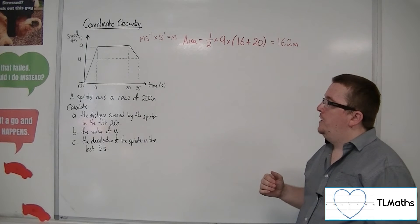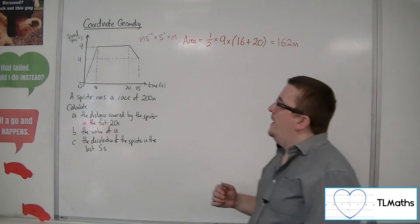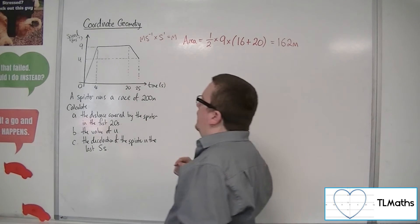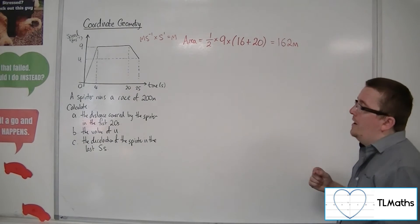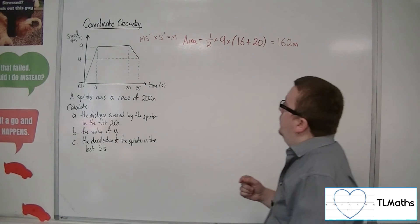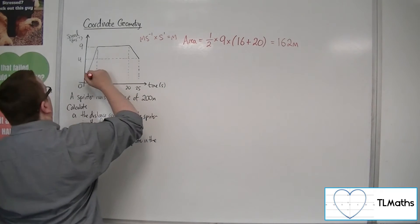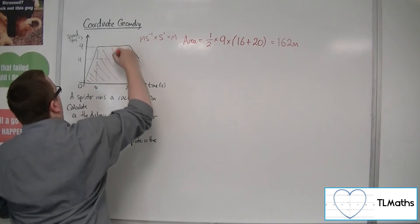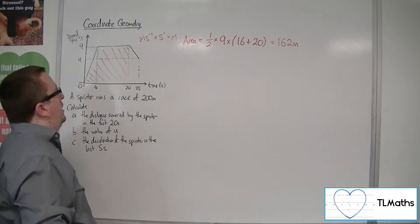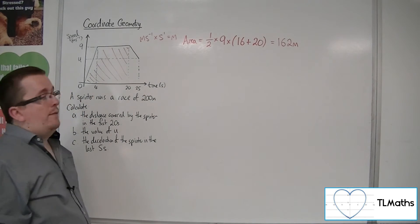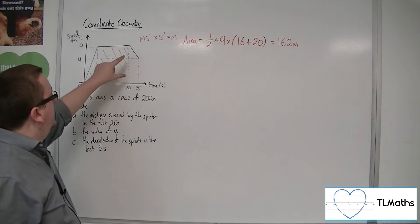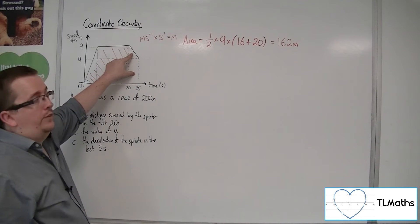So they cover 162 metres in the first 20 seconds. Now we need to find the value of u. What we have here is that the sprinter runs a race of 200 metres.